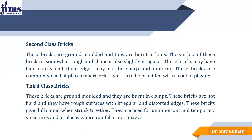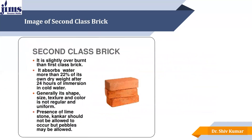The next is the third class brick. These bricks are ground molded and burnt in kilns. They have irregular and rough surface with distorted edges. These kind of bricks are not recommended for places where rainfall is comparatively heavy. Generally, their shape, size, texture and color is not regular and uniform — each batch of bricks may have different color, texture and shape.